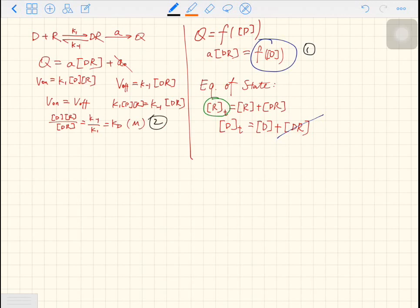We only know there is a relationship as F here, but we don't know what kind of relationship it is. We have a second relationship. It is the definition of KD, dissociate constant. We have two equations of state, RT and DT. As we can see in equation number one, D is the independent variable. However,